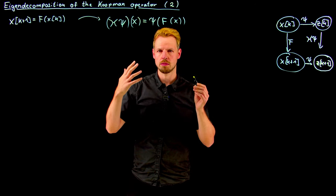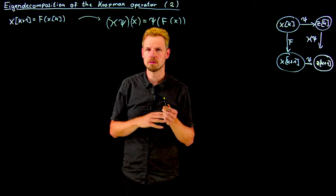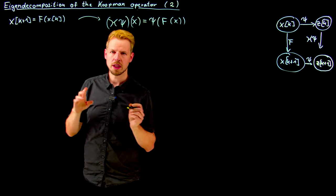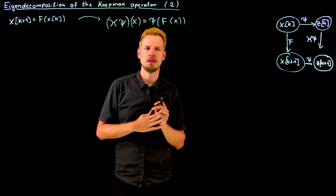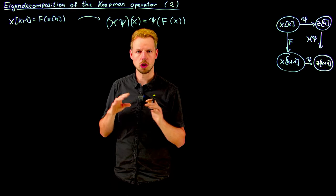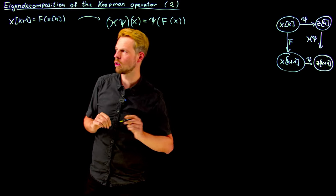What we need to ensure first of all is that the Koopman operator is in fact a linear operator, which can be very easily shown. Then we can start to define eigenfunctions and then see how this allows us to do the decomposition that we found so useful for linear systems in the video before.